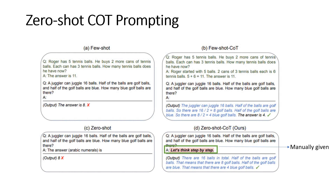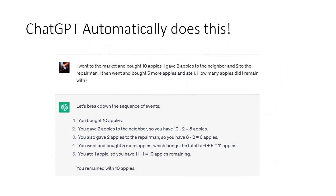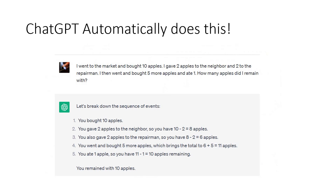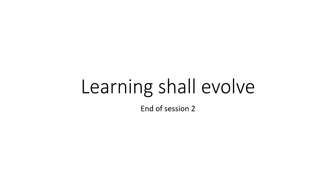So we have discussed all the prompting types and I hope you understand them. ChatGPT now goes with zero-shot COT even without you explicitly telling it — you can see that it is properly breaking things down into a sequence of events. That is how ChatGPT has advanced. In this session we have clearly understood the types of prompting. I hope you liked it. If you have questions, you can type them in the chat section and I'd be really glad to assist. Thank you.